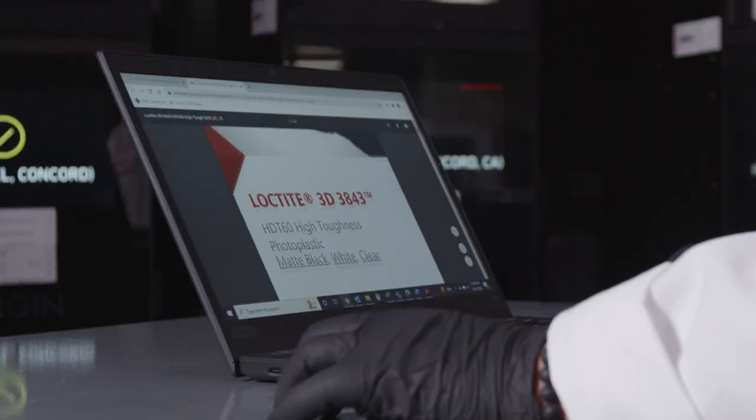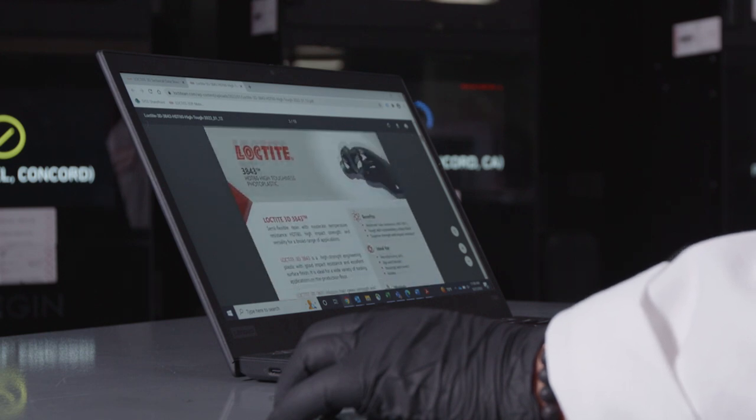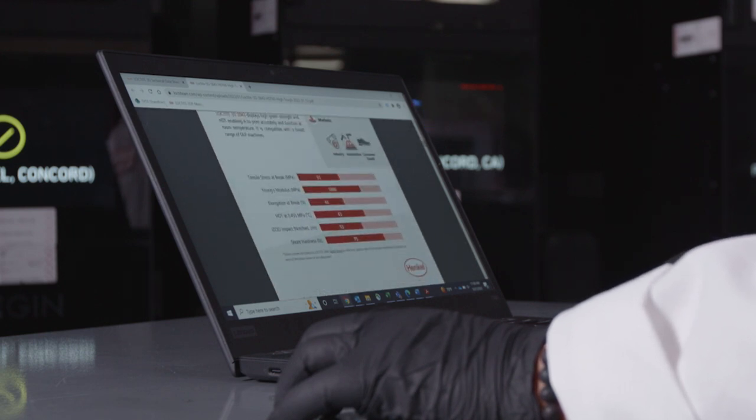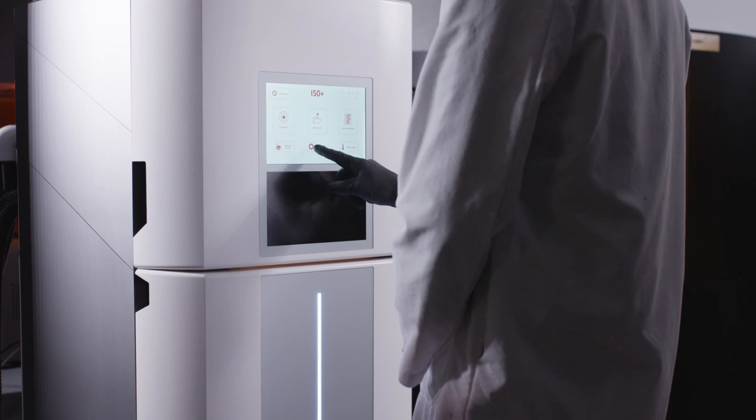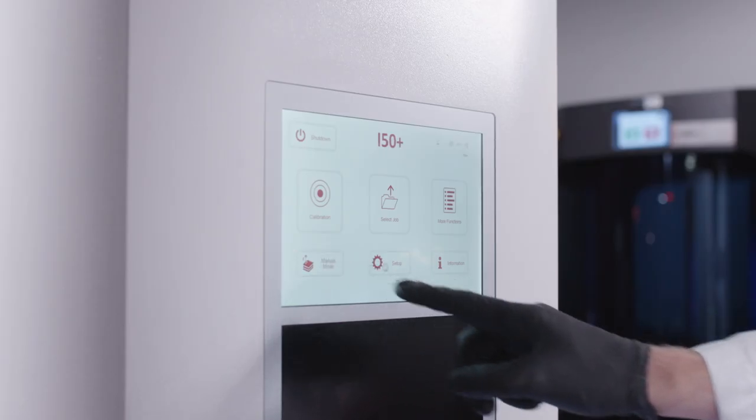To achieve the best results, find the validated workflow for your printer on LoctiteAM.com. With the workflow guidance available, you can begin adjusting the printer settings according to the document.